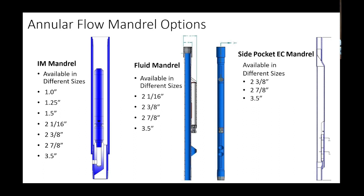With an inner mandrel you can run an inch-and-a-half valve regardless of casing size — important for annular flow because you may need to inject more gas. A larger port size also gives you better valve stability. The disadvantage is it's inside the tubing, so there's no through-tubing access.